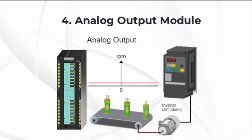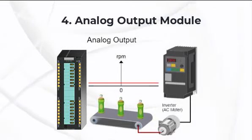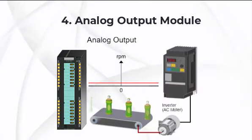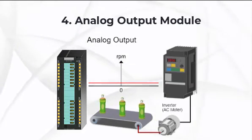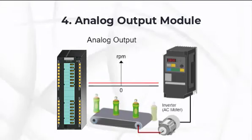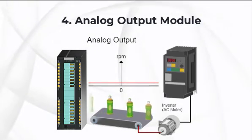In other words, the analog output module gives the output to the devices that can have many positions rather than two only. For example, speed control of motor can be controlled by analog output module by giving the analog signal to VFD.